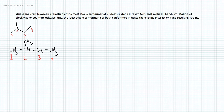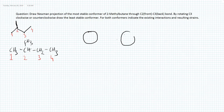The most stable conformer of any organic molecule should always be a staggered conformer. Let's draw a staggered conformer template here, another template for a second staggered conformer, and a third template for the least stable conformer.